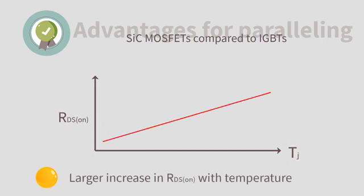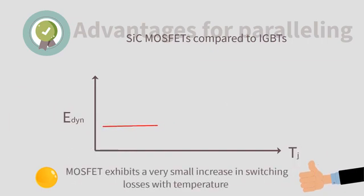RDS-on has a larger increase with temperature, which has a strong positive feedback effect. On the other hand, the SiC MOSFET compared to IGBTs exhibits only a small increase in switching losses with temperature.